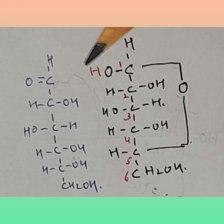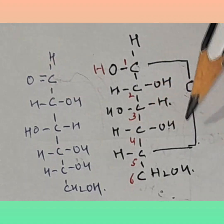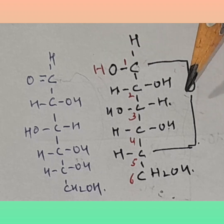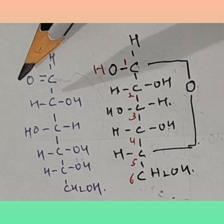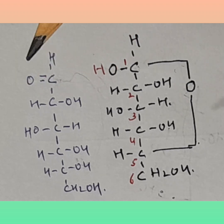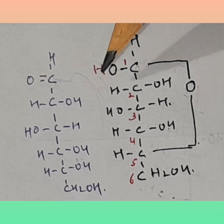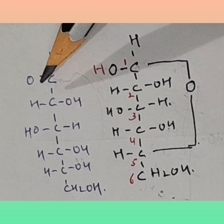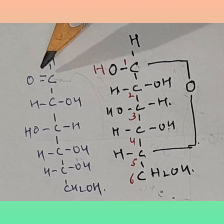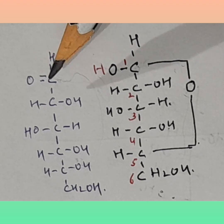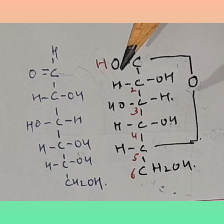For understanding reducing sugar, let's get back to our original structure. In cyclized form it formed hemiacetal. Now whenever there is a glycosidic linkage, if this OH is involved in the glycosidic linkage, that means it is involved, and if it is involved that means this cannot be oxidized.